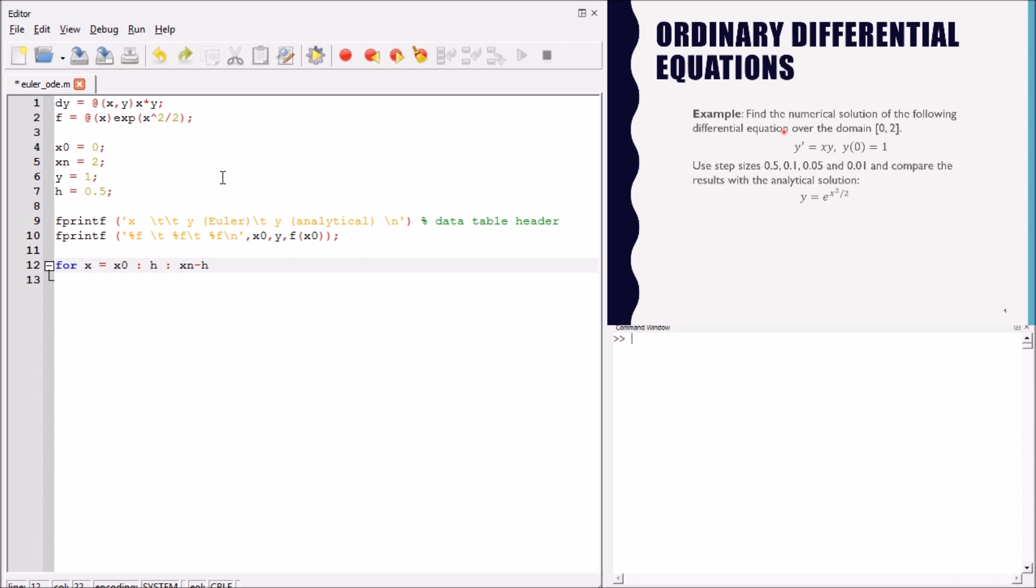When we approach the point x n minus h, we will compute the solution at x n. This is the idea. Let's now write the script inside the loop.